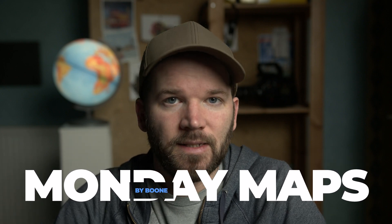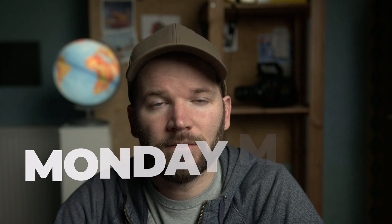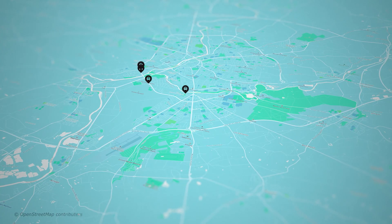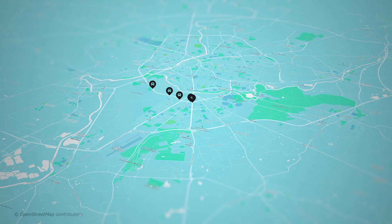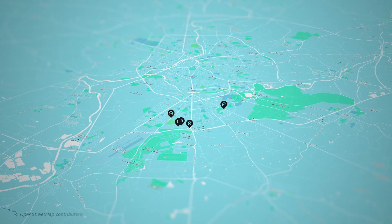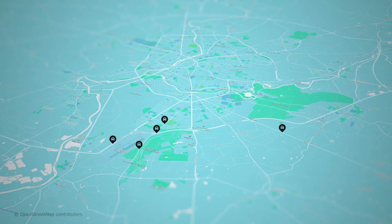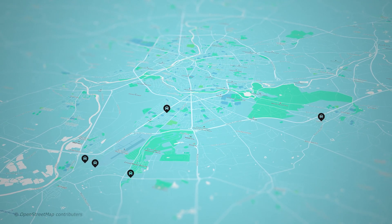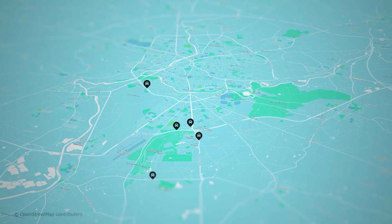I recently got my French driver's license and had to do a couple hours of training in a student car, since the rules here are different than in the United States. My driving instructor said the final test would be in a particular area of the city, so I wanted to visualize where I was driving. On today's episode of Monday Maps, I'm going to visualize these routes — I recorded five of them as GPX files — and bring those into Adobe After Effects to create animated maps using the GeoLayers 3 plugin.